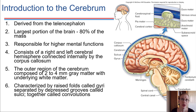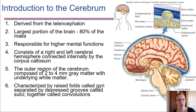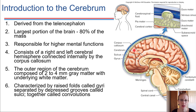Moving into a fully developed adult brain, we are going to be looking at each of the different regions. We're going to start with the largest region, the cerebral hemispheres, or the cerebrum. This is what makes up 80% of the brain. We're going to be starting up here in this region — this is the cerebrum.